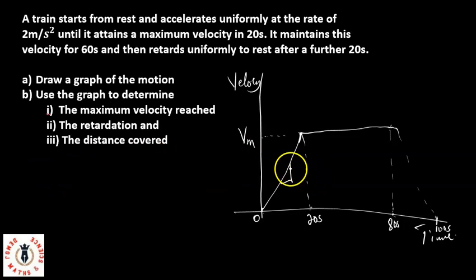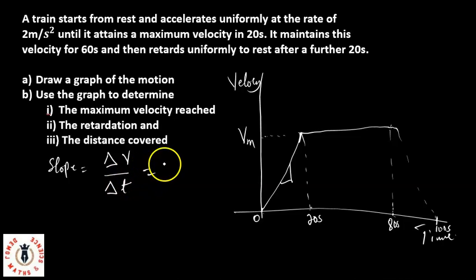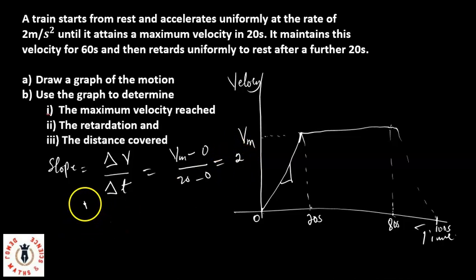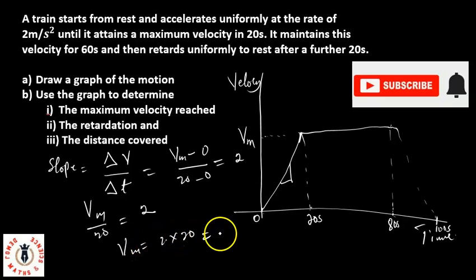Since the acceleration is the slope of this graph, the slope equals the change in velocity over the change in time — that is, Vm minus 0 over 20 minus 0 — which equals 2 meters per second squared. So Vm over 20 equals 2, meaning Vm equals 2 times 20, which equals 40 meters per second.